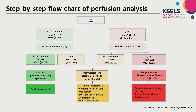We designed a step-by-step flowchart of perfusion parameters to identify poor perfusion patients. The risk zone was classified as safe, intermediate, and dangerous, reflecting the risk of anastomotic complications. In the dangerous zone, anastomotic complications could occur in more than 70% of patients. Therefore, we can consider changing surgical strategies to prevent serious complications.